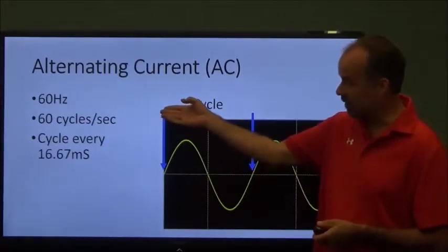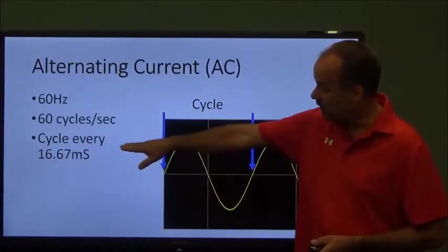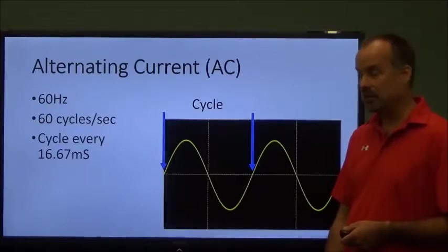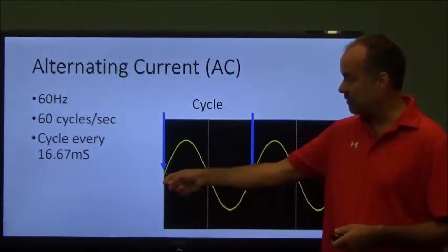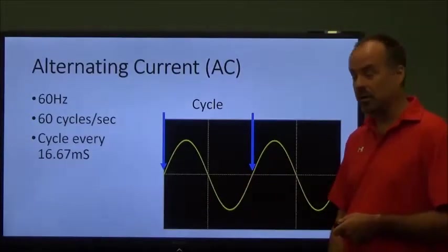That's 60 cycles a second or if you break it down, how long does the cycle last? Every cycle repeats every 16.67 milliseconds. It takes 16 milliseconds to complete a cycle and this just continues on and on.